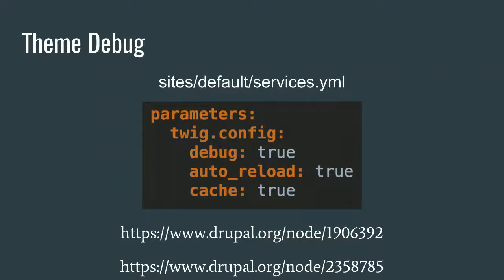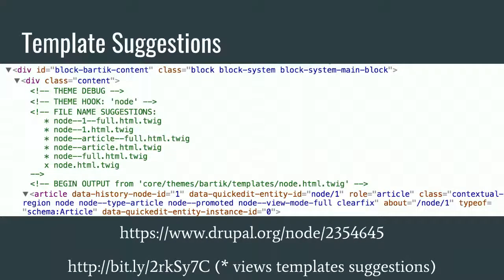To enable ThemeDebug, there is a file in your Drupal installation under sites/default called services.yml. You modify the parameters under twig.config under parameters — setting debug, auto_reload, and cache to true. After clearing the caches, ThemeDebug is enabled.